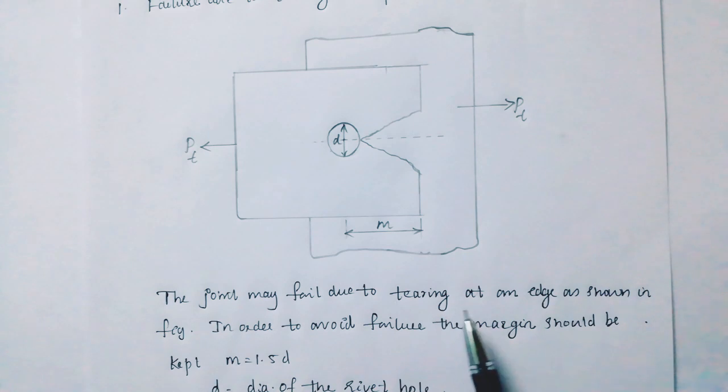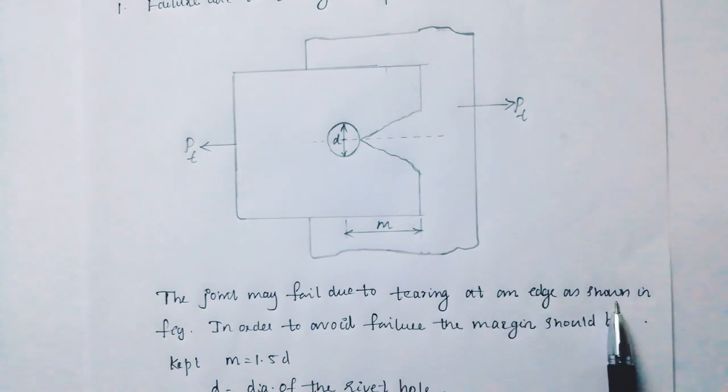The joint may fail due to tearing at an edge as shown in the figure. In order to avoid failure, the margin should be kept M equals 1.5D.